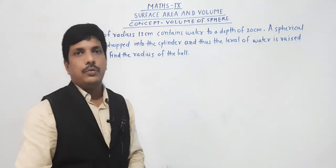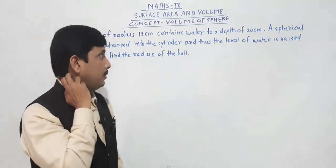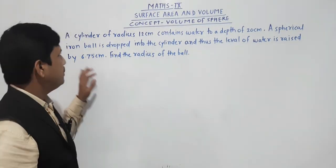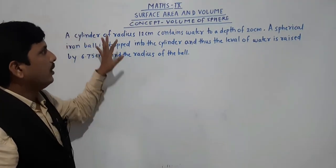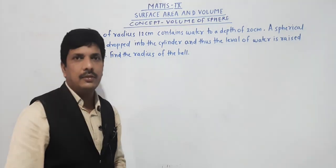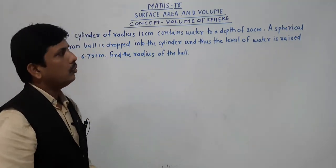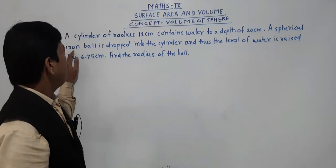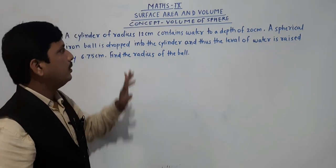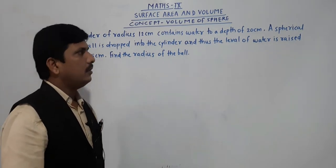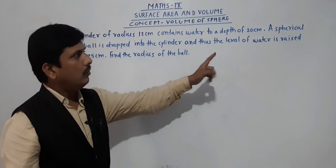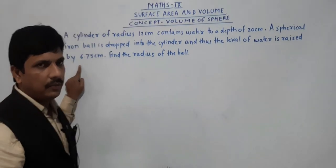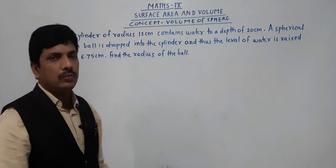Hello everybody. Today we are going to see some problems which depend on the volume of a sphere. The first problem is: a cylinder of radius 12 centimeters contains water to a depth of 20 centimeters. A spherical iron ball is dropped into the cylinder and the level of water is raised by 6.75 centimeters. Find the radius of the ball.